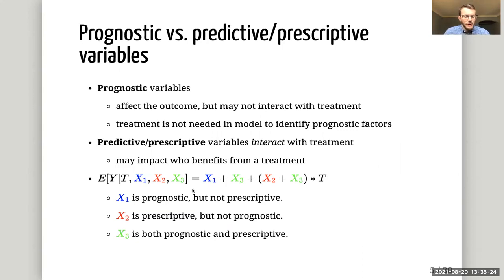Y is our observed outcome, where we view larger values as being better. In understanding who benefits from a treatment when there's treatment effect heterogeneity, it's important to distinguish between prognostic and prescriptive variables.